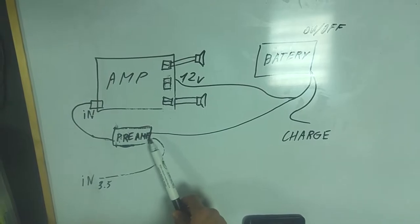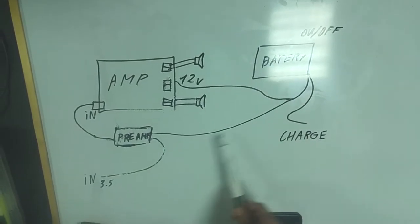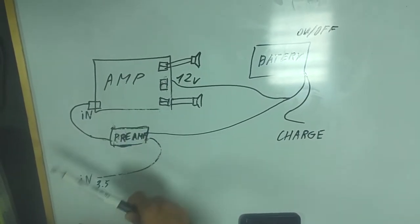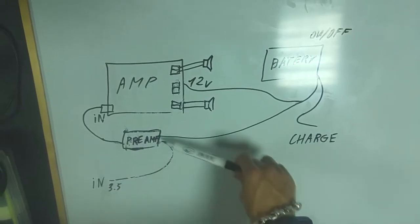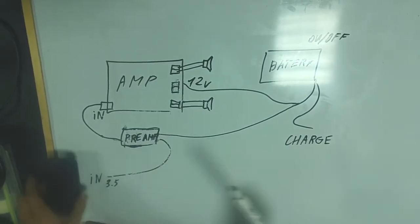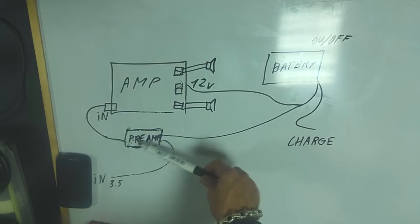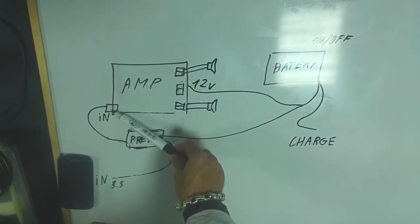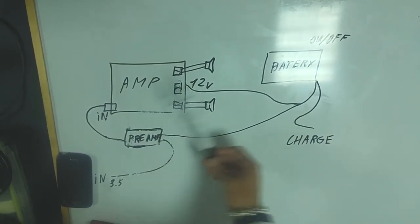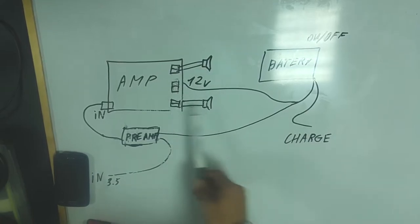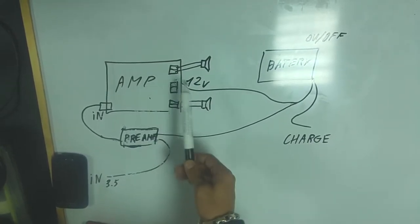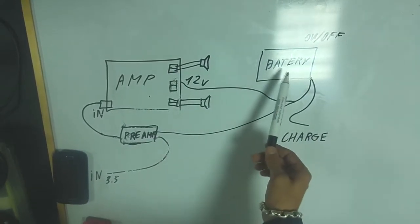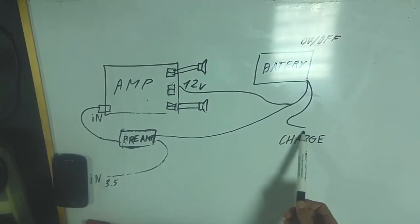Here is your amplifier. It gets 12 volts from the battery. The amplifier sound from the cell phone goes through here and from here in the intake in the amplifier. From here it goes to the speakers and the amplifier gets also 12 volts from the battery. And here is your charge plug-in.